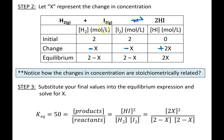The hydrogen gas is being used up so it's decreasing; the iodine gas is also decreasing; while hydrogen iodide is being produced so it's increasing. We let x represent the change in concentration. For every 1 hydrogen used up, 1 iodine must also be used up — a 1 to 1 ratio — but for every 1 of these used up, 2 hydrogen iodide are produced, which is why it's a 2x value. At equilibrium, hydrogen is 2−x, iodine is 2−x, and hydrogen iodide is 2x.